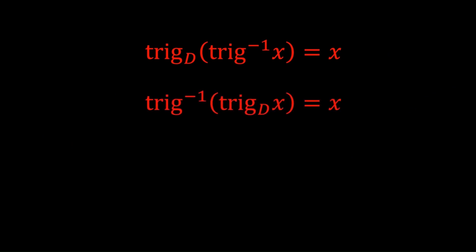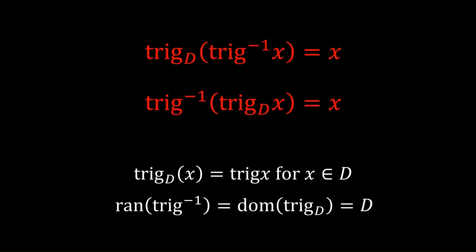But if possible, we want to write these in terms of only trig. That is, we don't want to talk about trig d. How do we do that? We remember the fact that trig d of x is identical to trig of x, for x in d. And we have this first equation is trig d of something. That something is trig inverse. Is trig inverse in the domain d? Well, we know that the range of trig inverse is the domain of trig d, which is d. So yes, trig inverse is in d, and that means we can change this first equation to just trig of trig inverse. This first identity is extremely useful.